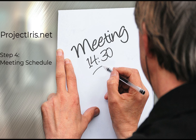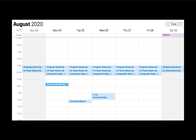In a complex program there can be scores of meetings. Those meetings are typically captured in a Word document or spreadsheet, listing the meetings, who the attendees will be, the purpose of the meeting, and any preparation that needs to be made. The more agile approach is to reduce the paperwork, reduce the documentation, and go